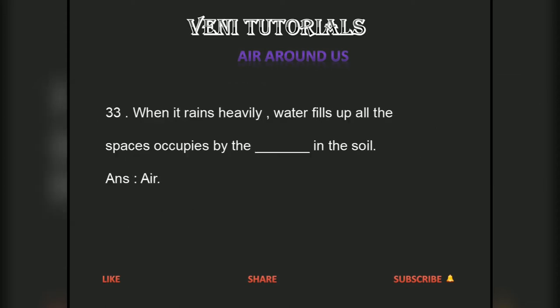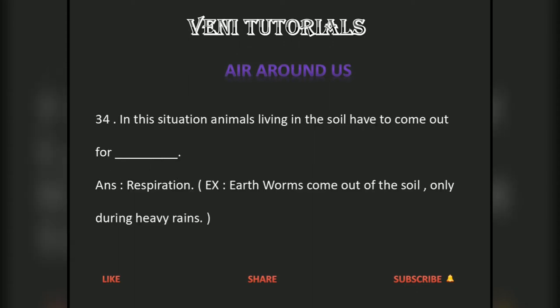When it rains heavily, water fills up all the spaces occupied by the air in the soil. In this situation, animals living in the soil have to come out for respiration. For example, earthworms come out of the soil only during heavy rains.